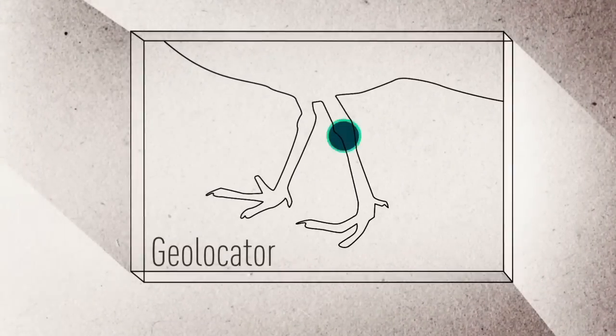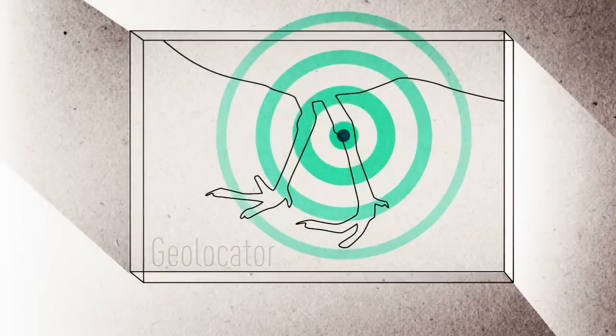Certain birds, especially juveniles about whose movements and ecology little is known, are outfitted with geolocator devices.